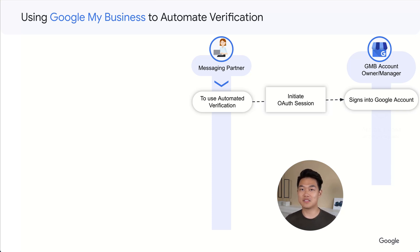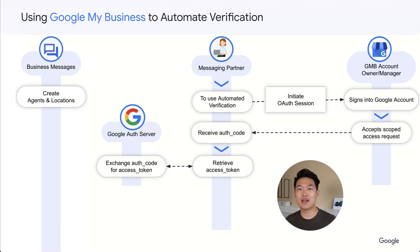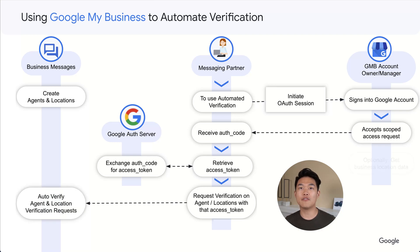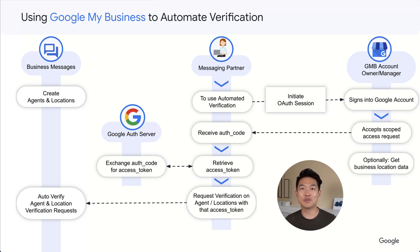Once they log in, they're notified that your application is requesting two scopes of access: access to their Google My Business listing data and access to the business communications API. Once the listing owner or manager authorizes your application, you receive an auth code that you can exchange for an access token. On the business messages agents you've already created, you can take this access token to verify them using the API. You can also use the data available on Google My Business to add all location data relevant to the agent and use the access token to verify those locations as well. This process will immediately verify the agents and locations you request verification on, and once verified, you can proceed to launching them.